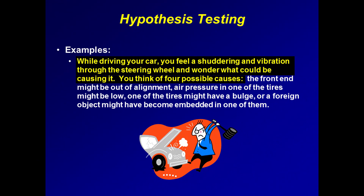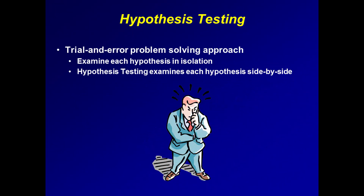Let's try this again using the example on the slide. Think about each hypothesis. You just had the front end realigned a few days earlier — it's possible it's gone out of alignment again, but unlikely. You check the air pressure in each tire when you got gas 15 minutes ago — it's possible that a tire is losing air, but unlikely in just 15 minutes. You also examined the tires at the gas station and found no bulges. That leaves a fourth hypothesis: a foreign object embedded in one of the tires. This illustrates the role that hypotheses routinely play when we analyze a problem. In this case, you have generated four hypotheses — four postulated causes for the vibration.